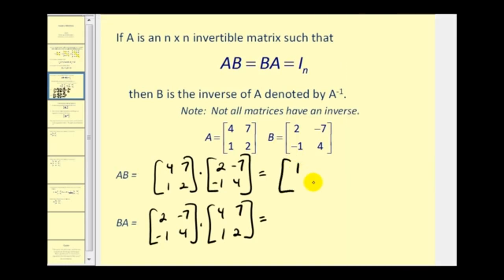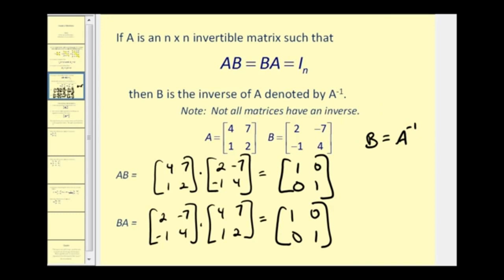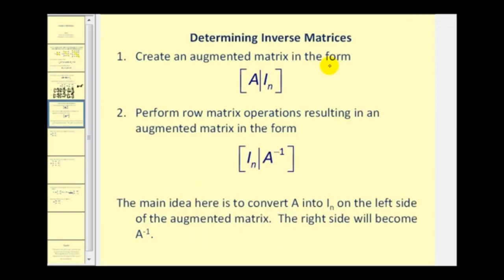So matrix B is the inverse of matrix A. Now we'll look at how we find the inverse of a given matrix using augmented matrices. We create an augmented matrix with matrix A on the left and the identity matrix on the right. Then we perform row operations to get the identity matrix on the left — and the right side will become the inverse of matrix A.